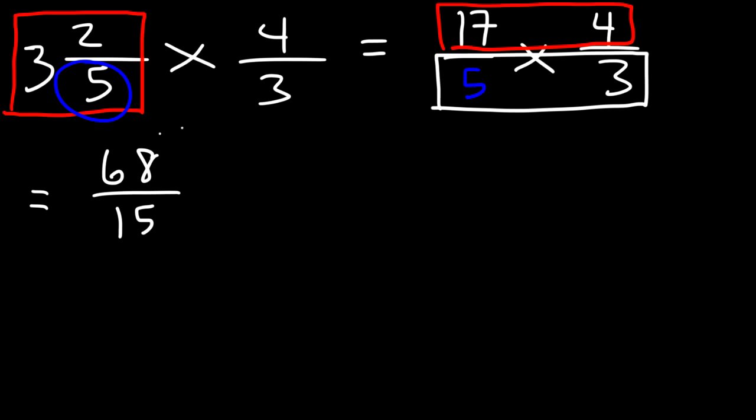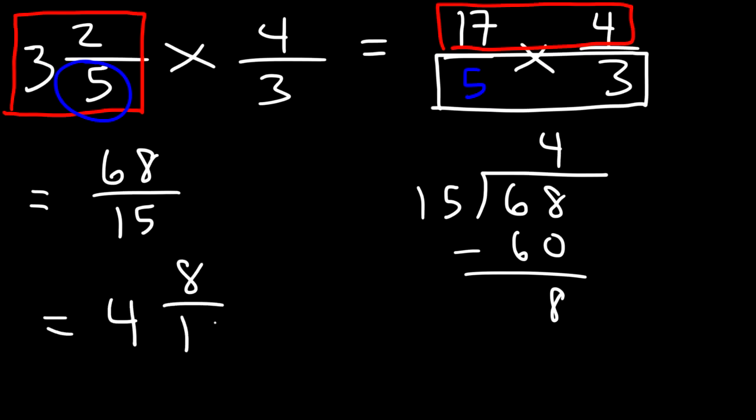So this is my answer as an improper fraction, but I'm going to convert it back to a mixed number. Let's use long division: 15 goes into 68 four times. 15 times 4 is 60, and 68 minus 60 is 8. So 68/15 is going to be 4 and 8/15 as a mixed number.